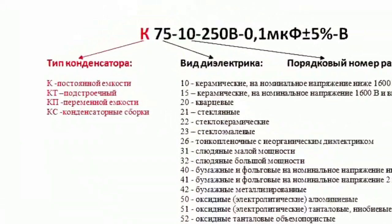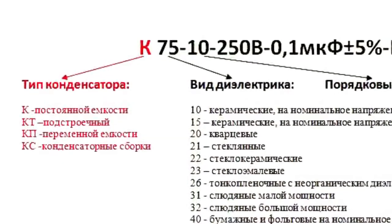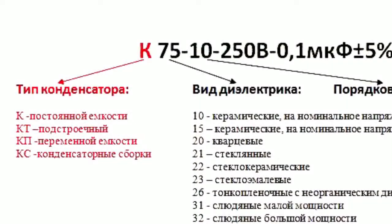The first element is a letter or a combination of letters which defines the type of a capacitor. K is a fixed capacity type, KT is an aligning type, KP is a variable capacity type, and KS types are capacitor units.